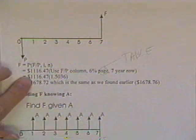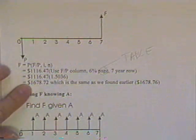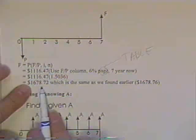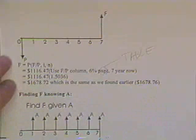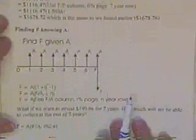And the factor is 1.5036, which does indeed give us $1,678 in about the same pennies. Pretty close.